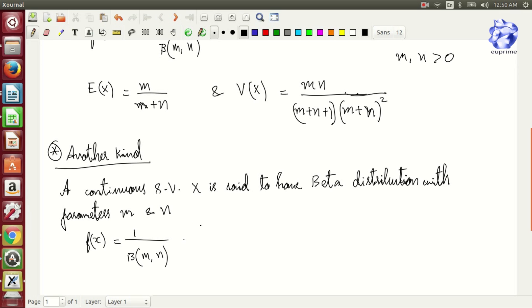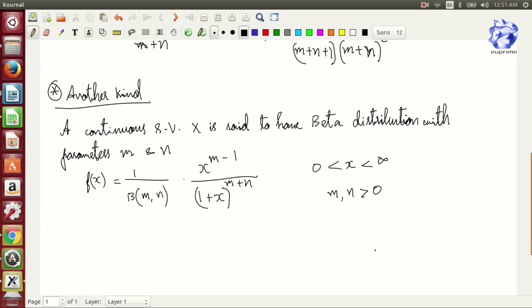f(x) equals 1 by beta of (m,n) into x to the power m minus 1 divided by (1+x) to the power m plus n, where x varies from 0 to infinity and m and n are positive, that is greater than 0. Here the mean E(x) is given by m/(n-1) and variance of x is given by m(m+n-1)/[(n-1)^2(n-2)].